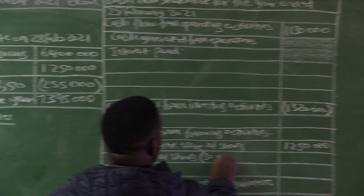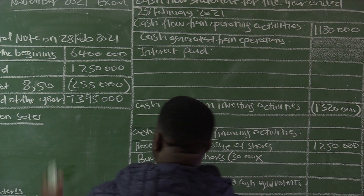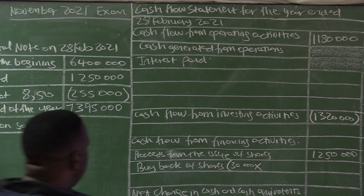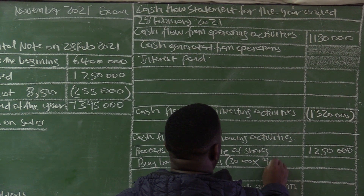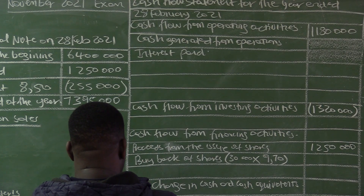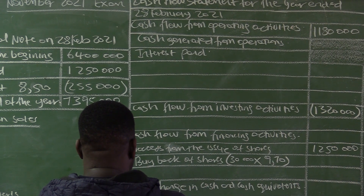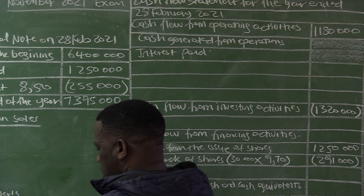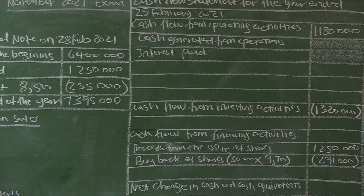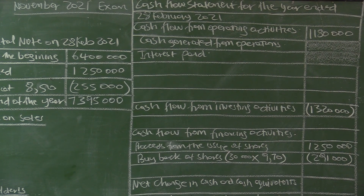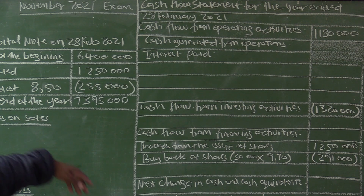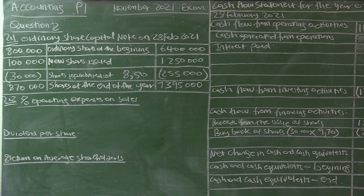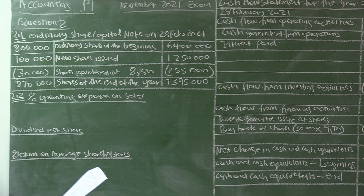The buyback amount is 30,000 shares multiplied by the total repurchase price. If the average is 850 and the above-average premium is 120, that gives 850 plus 120 equals 970. So 30,000 multiplied by 970 equals 291,000, shown in brackets in the cash flow statement. We have now finished the ordinary share capital note.